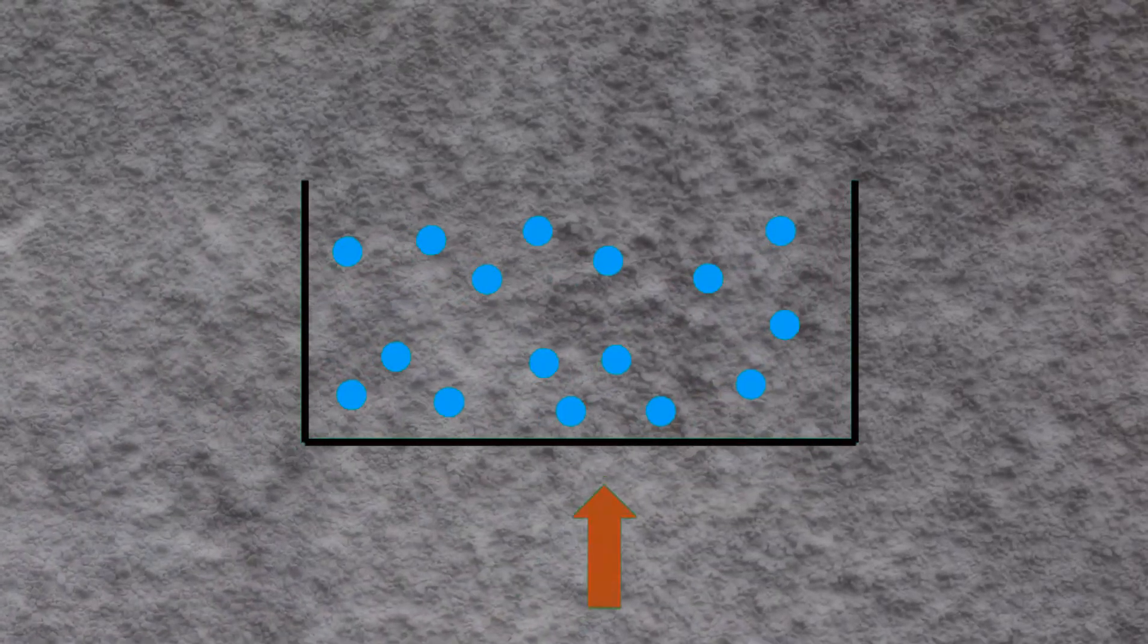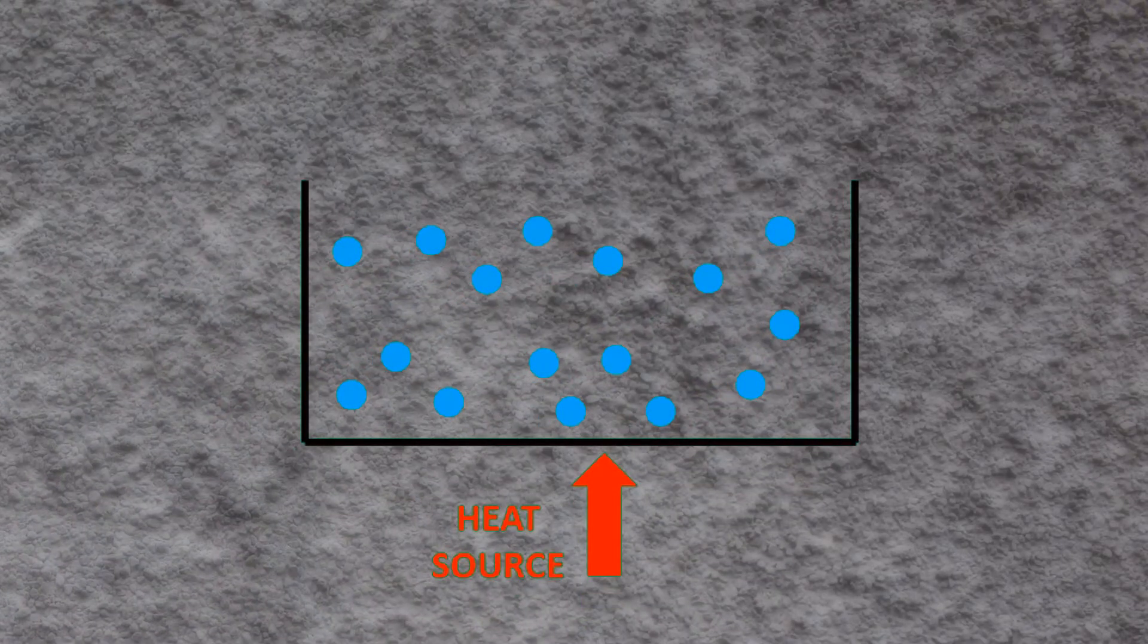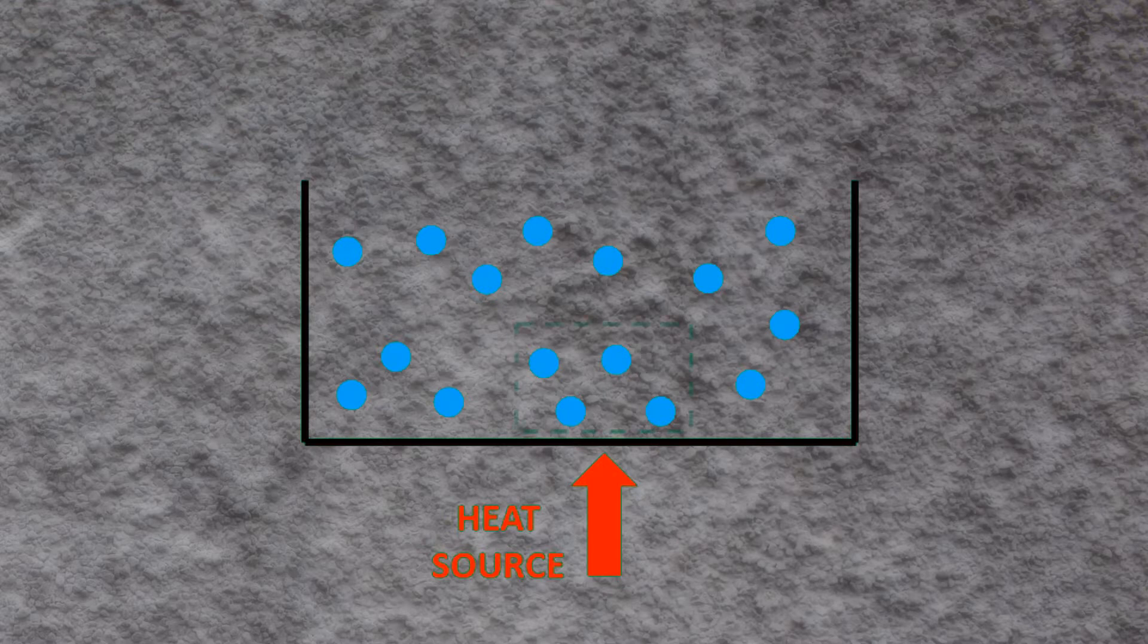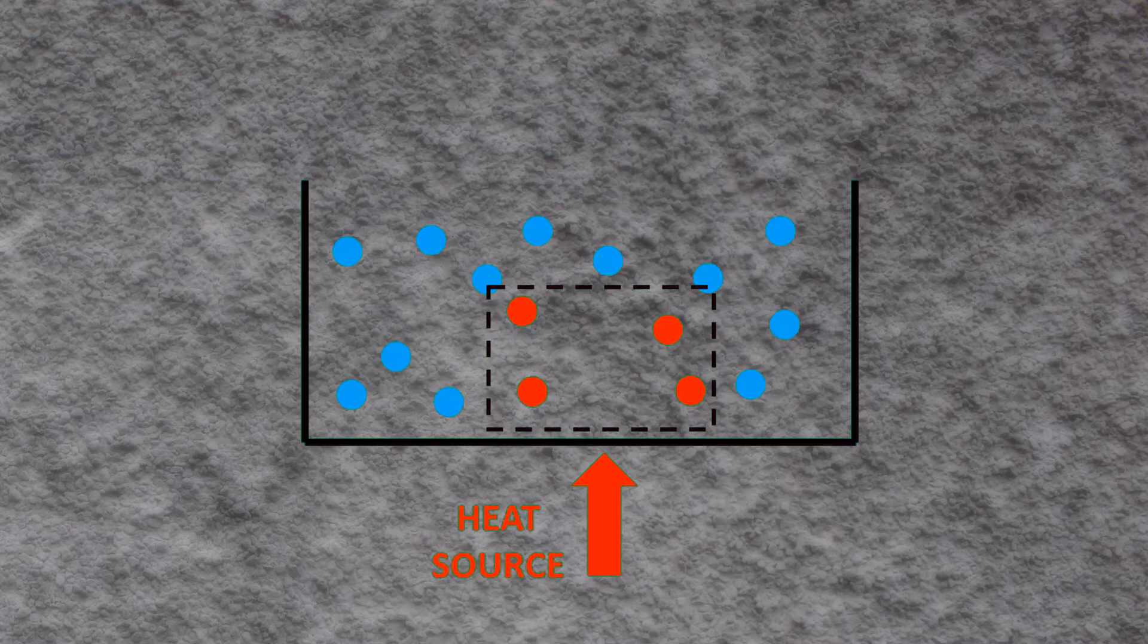In liquids and gases, together known as fluids, heat transfer is due to movement of the fluid molecules. When a fluid is heated, the volume of fluid closest to the heat source increases, and the density of that portion of fluid decreases.